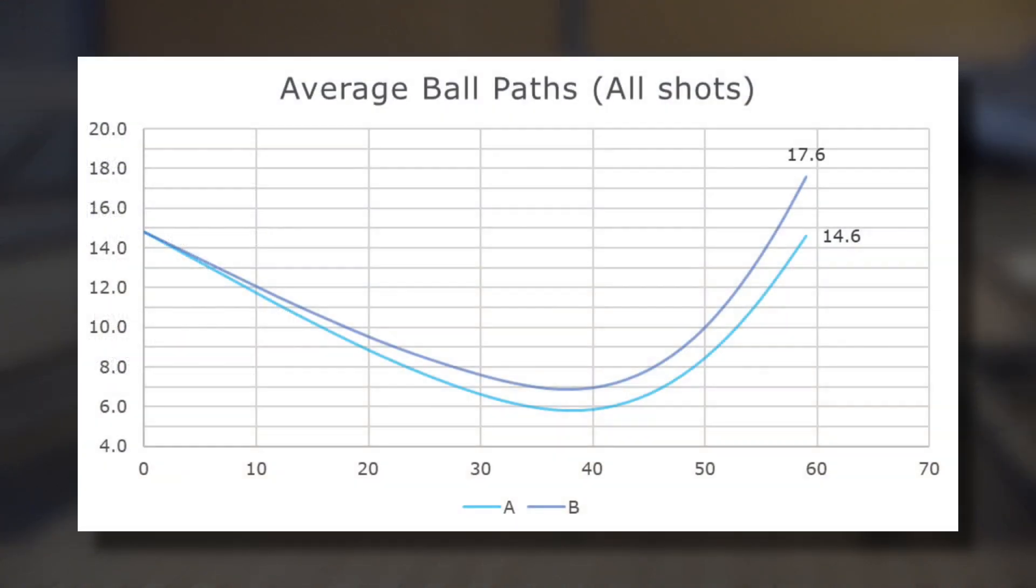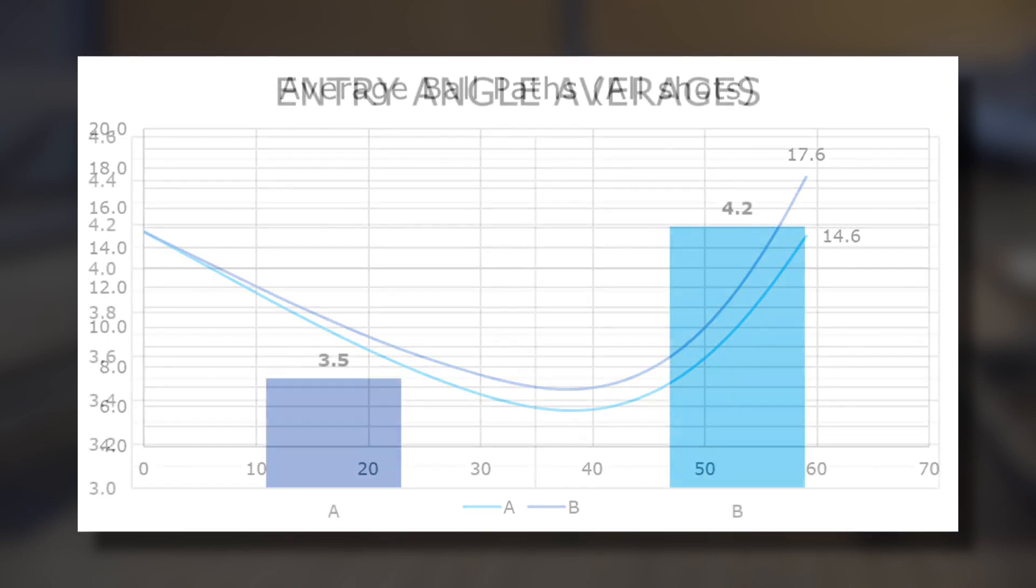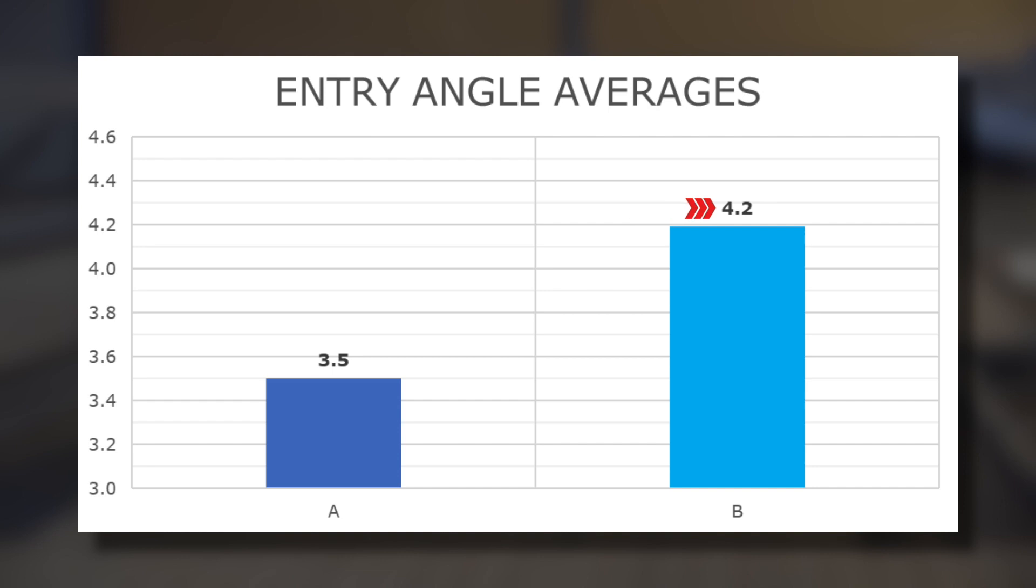The results of this test were much different, with the average ball paths of the softer ball showing a 3 board difference over the harder ball, and a 0.7 degree increase in entry angle.